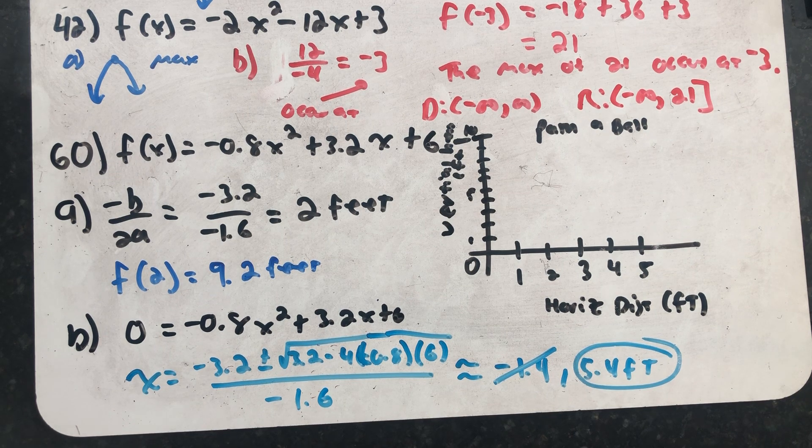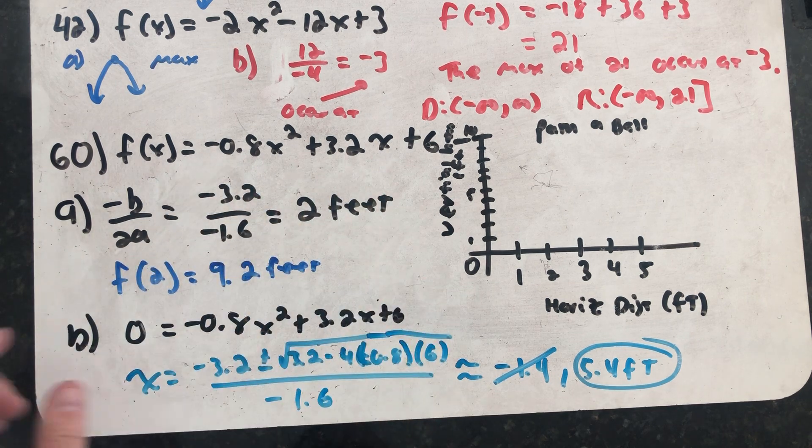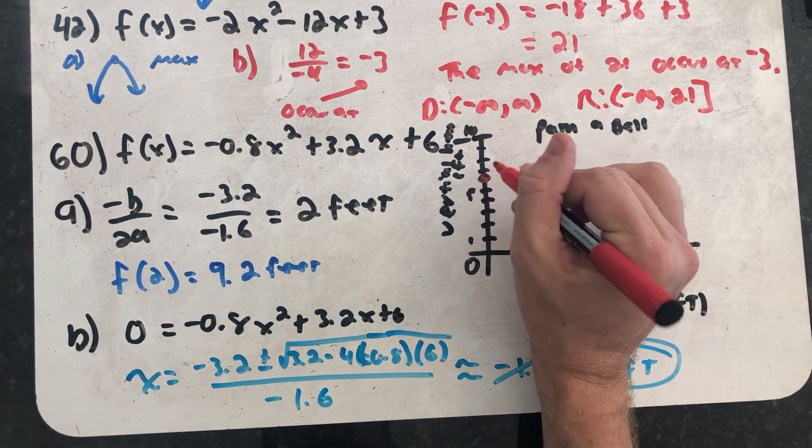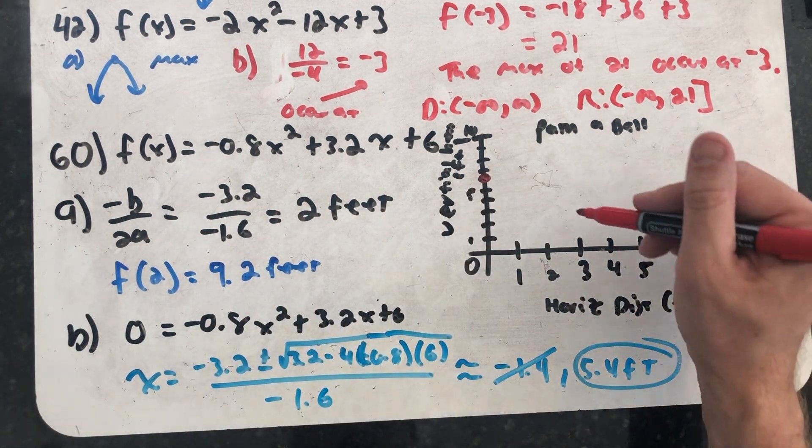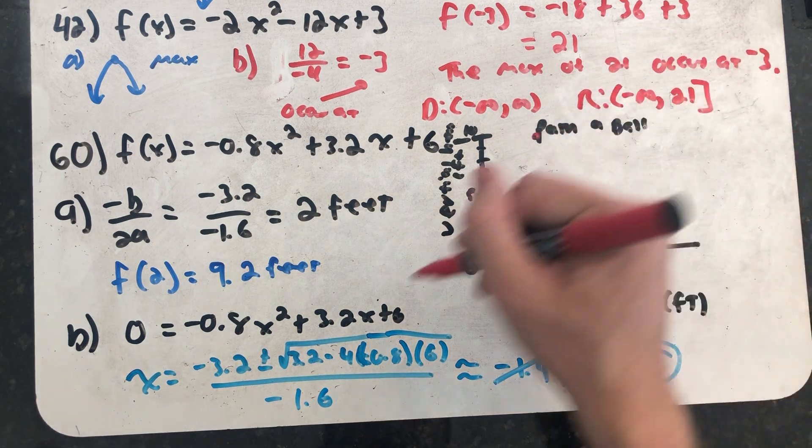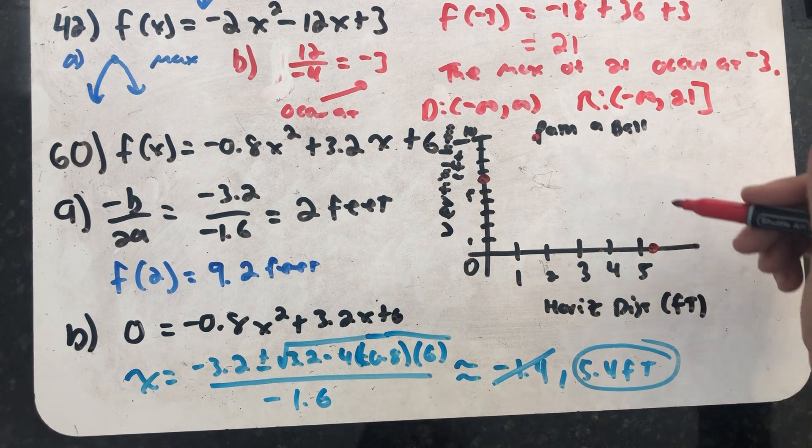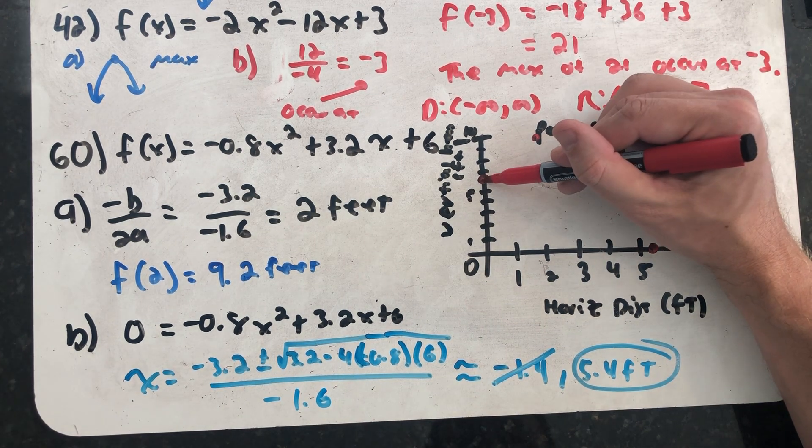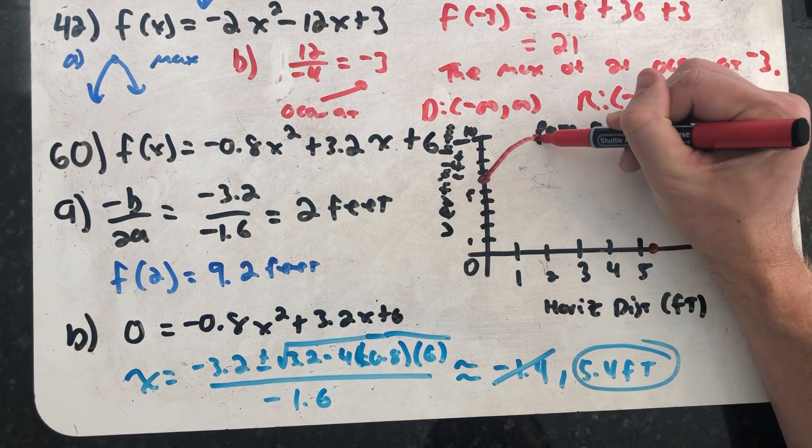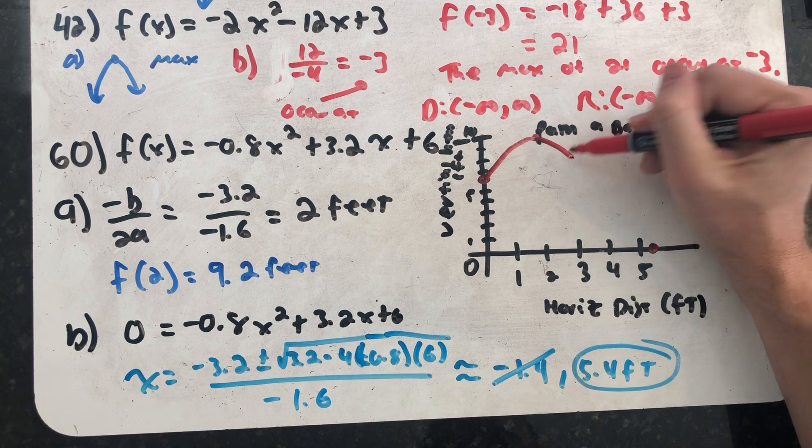Well, I'm actually told that the path of the ball starts at 6 feet. If I plug 0 in for x, I would find a y-intercept of 6 feet. The vertex is at 2, 9.2. And then I have an x-intercept down here at 5.4. And that's all the path I should plot. We throw a ball, and then it comes down and hits the ground.